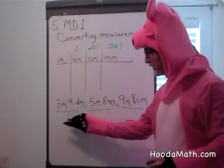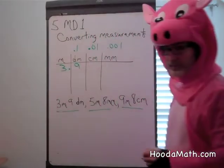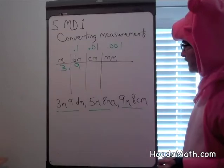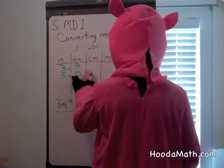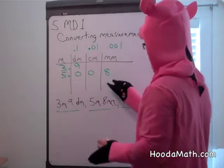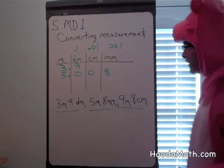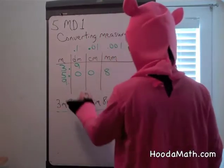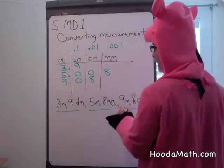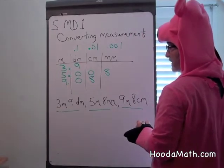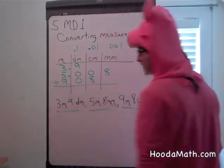So 3 meters and 9 decimeters would be 3 and 9 tenths of a meter. Five meters and 8 millimeters would be 5 meters, no decimeters, no centimeters, but 8 millimeters, or eight-thousandths of a meter. And finally, 9 meters and 8 centimeters would be 9 meters, no decimeters, 8 centimeters, and no millimeters, or 9 and 8 hundredths meters.